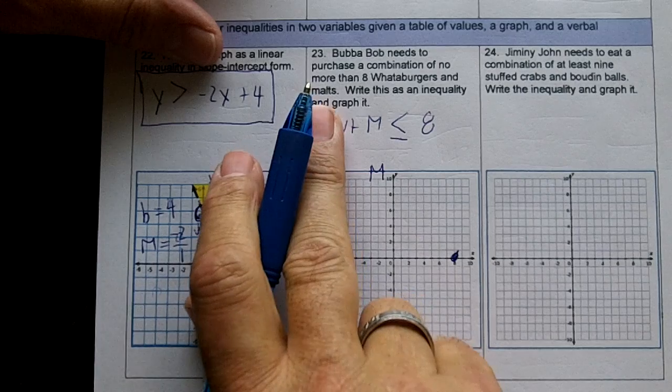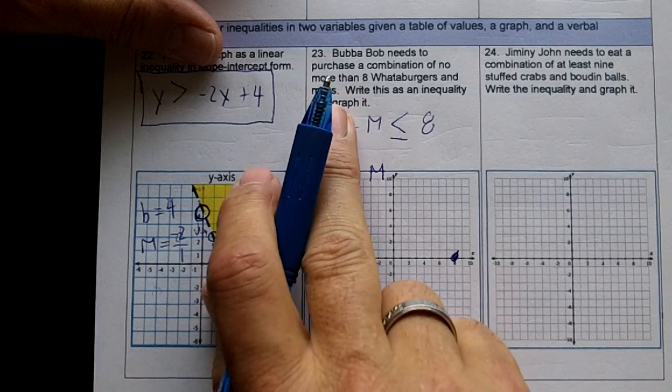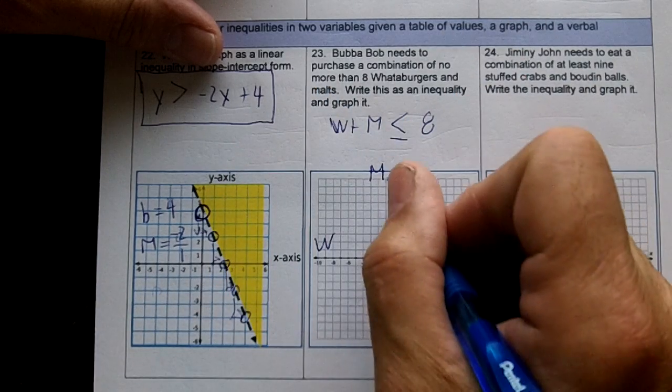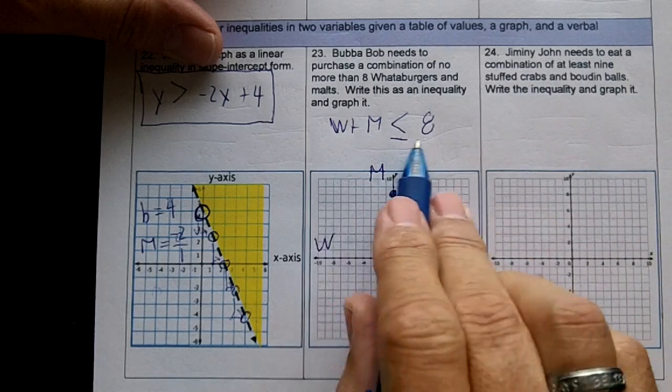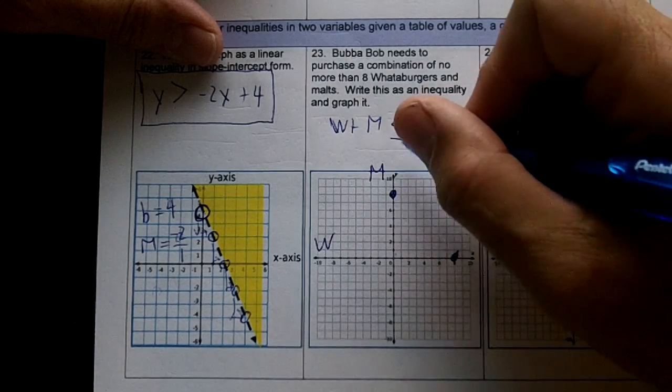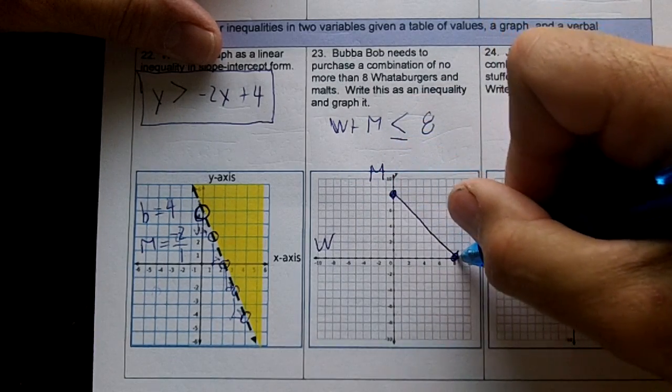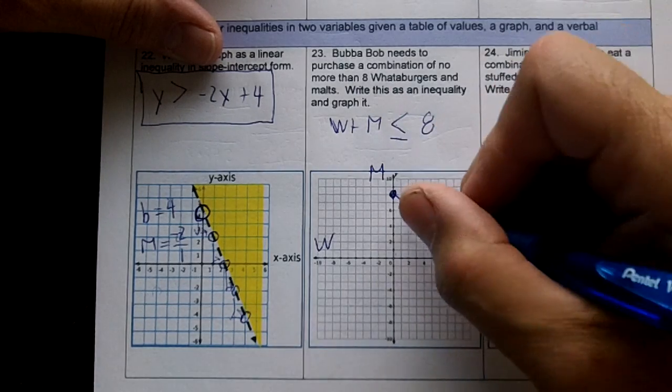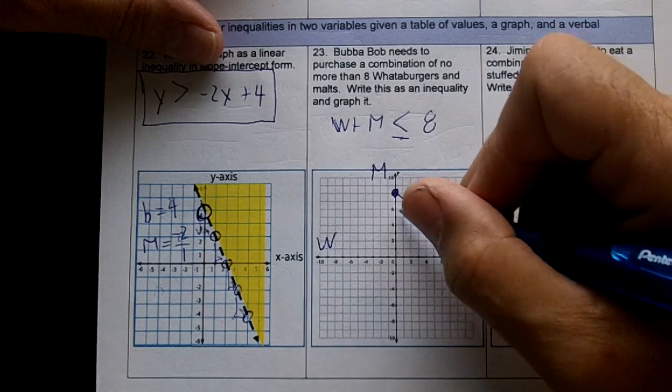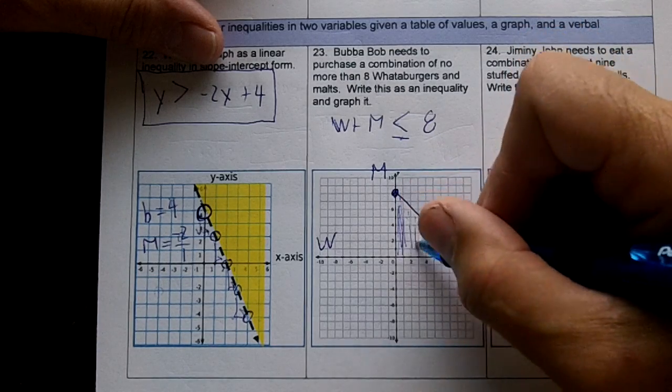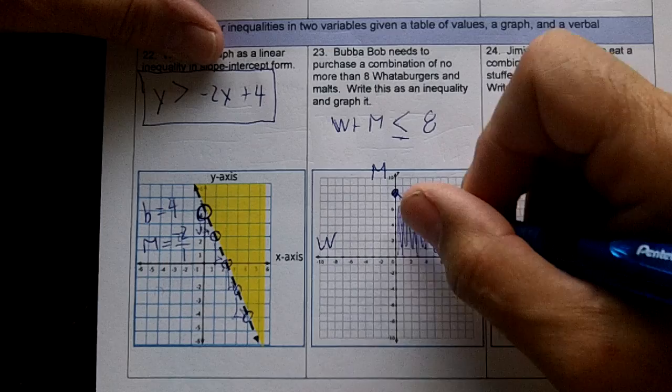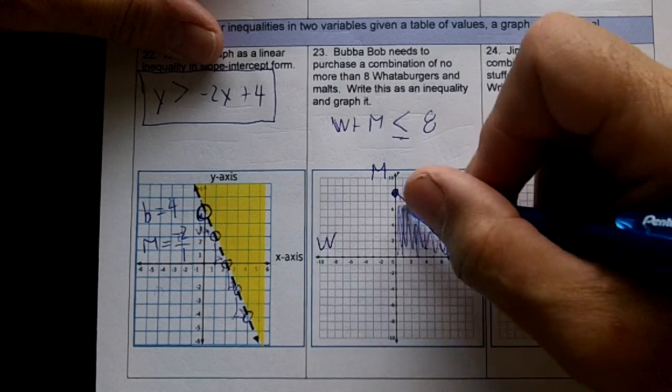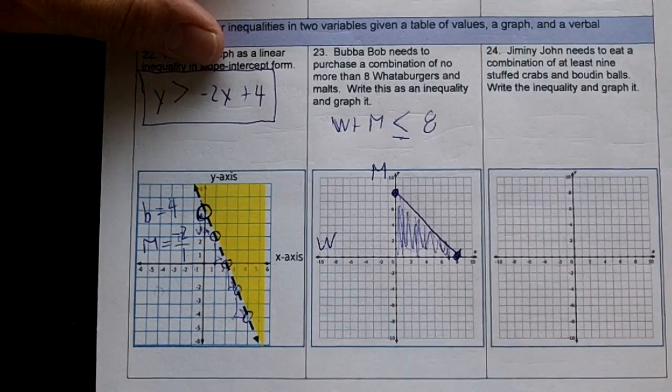If I get zero waterburgers, I need eight malts. So my x and y-intercepts are eight. Now then, I'm going to connect the intercepts, and I got to shade down. I can't get more than eight. I'm going to draw a solid line because of the equal bar, and this will be shaded in here. So any combination of waterburger malts in here will be less than or equal to eight.